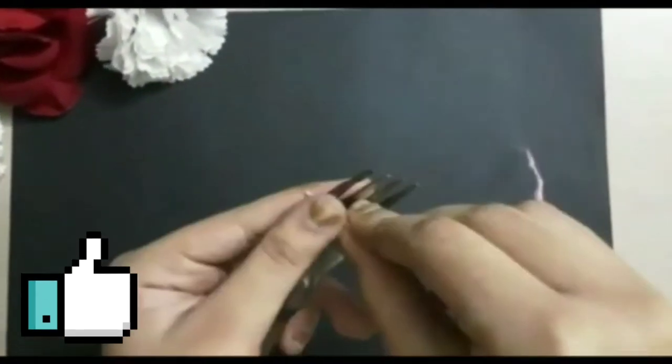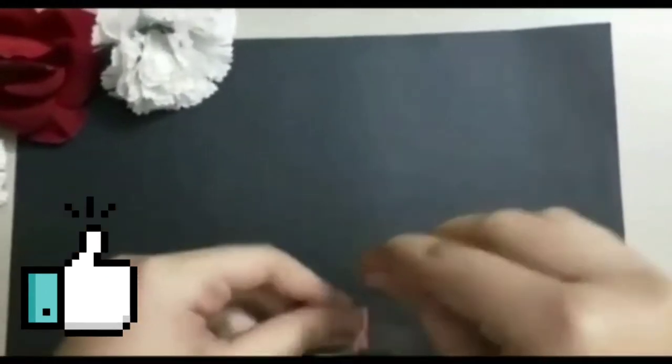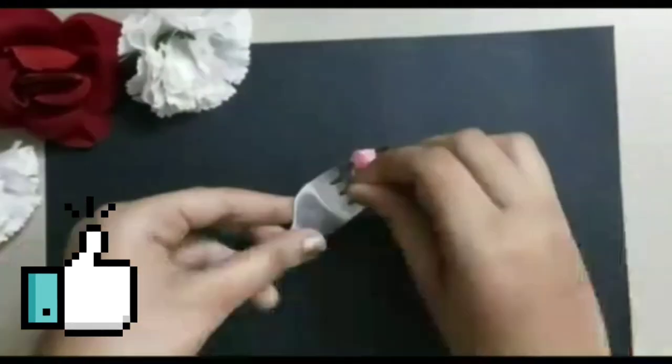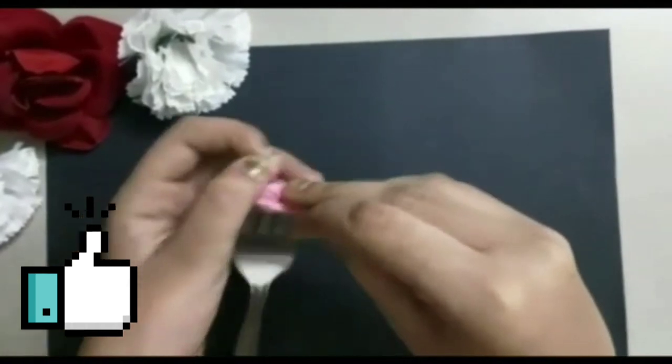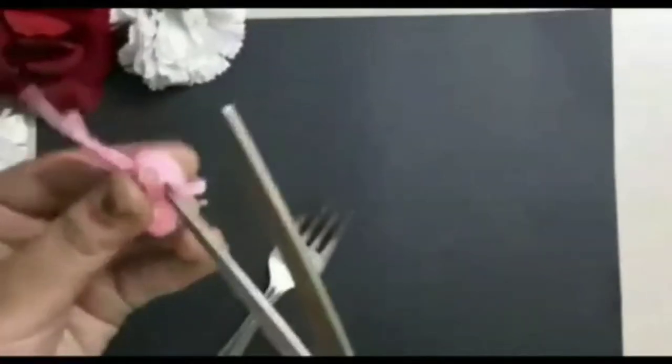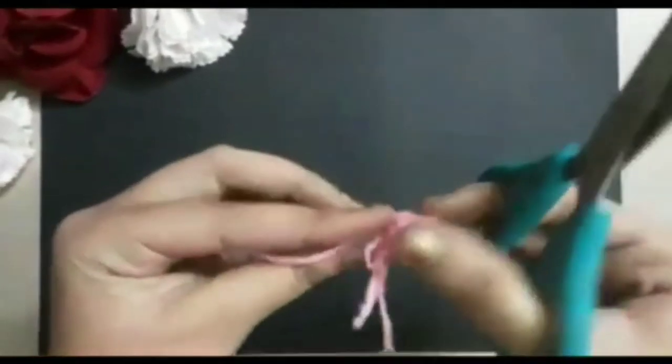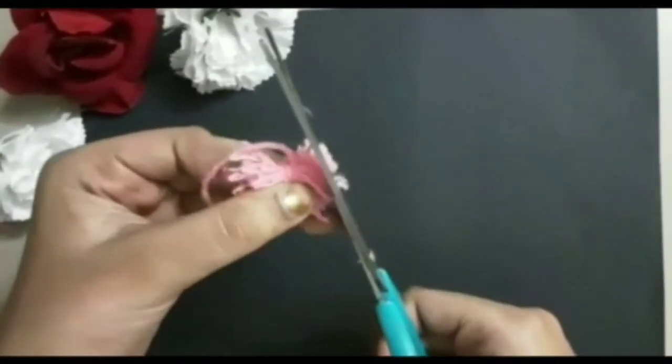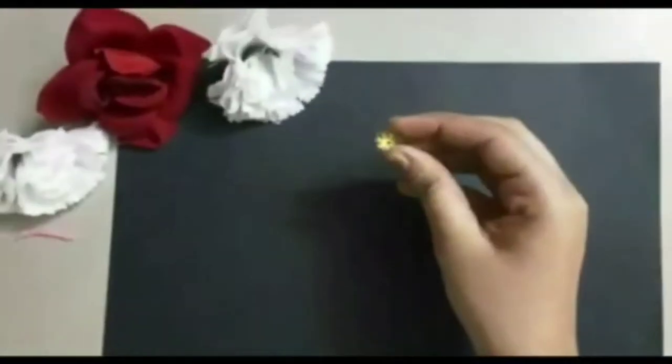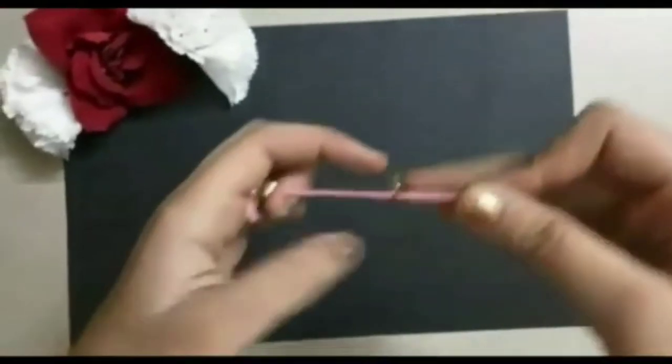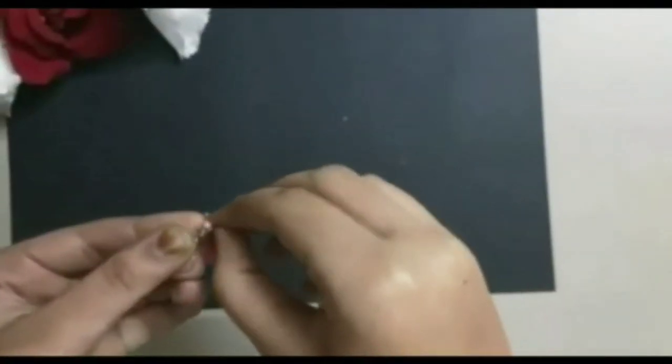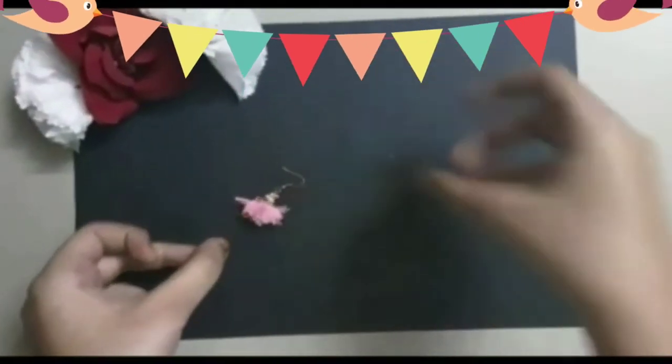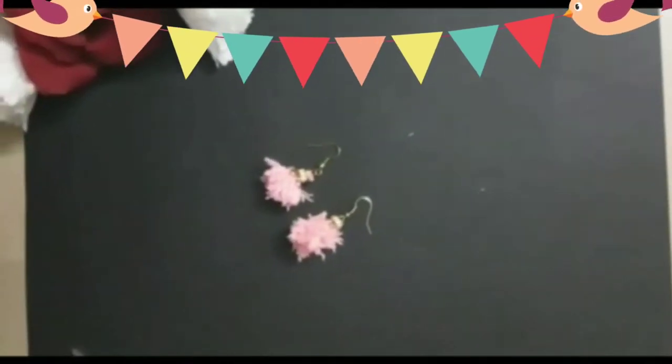Now tie a rope and cut it as shown. Tie a rope and add some design. And now add the ear hanger to it. Tie a knot. Make one more and our pom pom earring is ready.